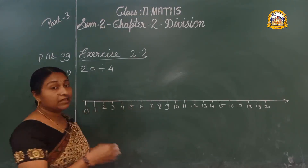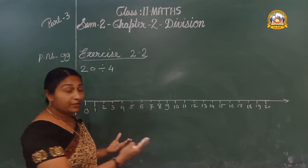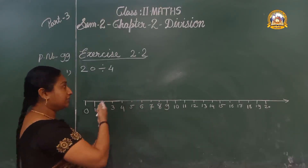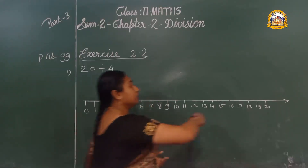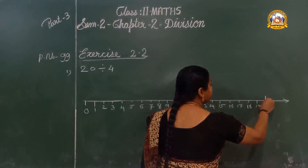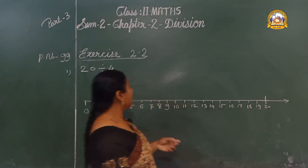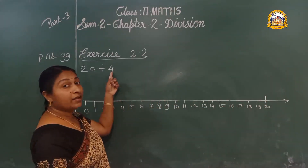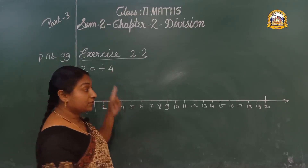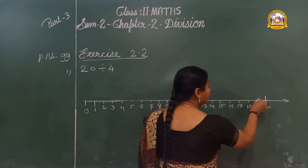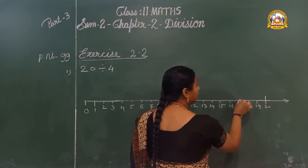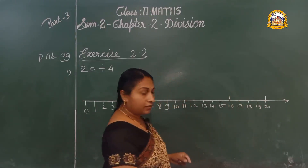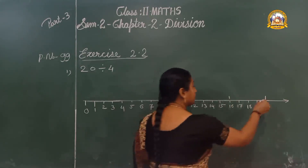Start from 20. Subtraction means right to left — backwards. Start from 20 and take 4 steps backwards: 1, 2, 3, 4. Now we have reached 16. That is the first jump. Again backwards, 4 steps: 1, 2, 3, 4 — we have reached 12.